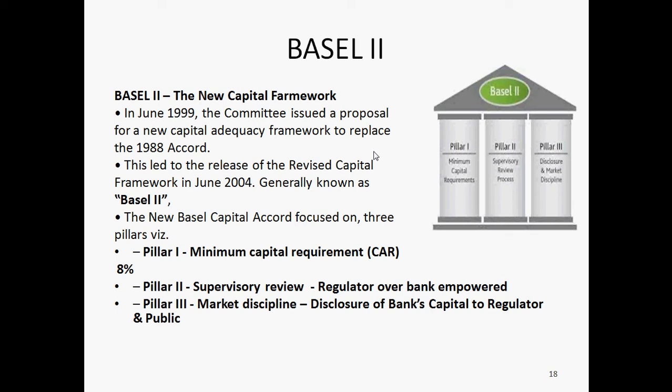This was Pillar 1 in Basel II, and the minimum 8% capital adequacy ratio is still maintained from Basel I. Pillar 2 is the supervisory review process. In this, a regulator is empowered to check on a bank whether it is maintaining this minimum 8% capital adequacy ratio or not. The amount of money which has to be maintained as part of the 8% requirement is verified, and a regulator will timely inspect and audit the bank to check this.